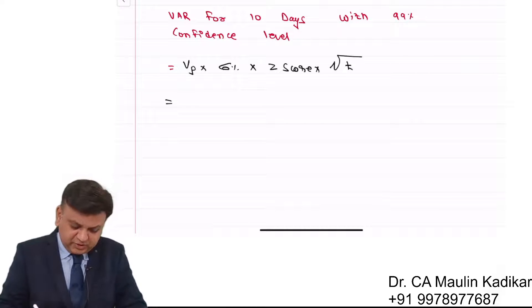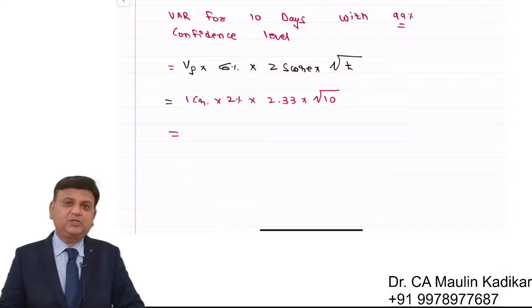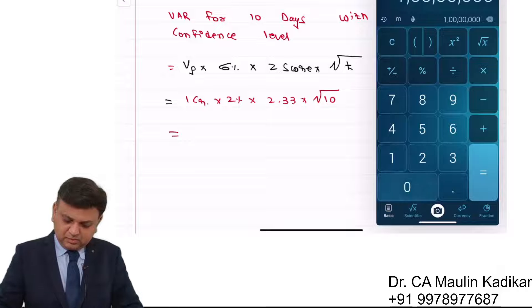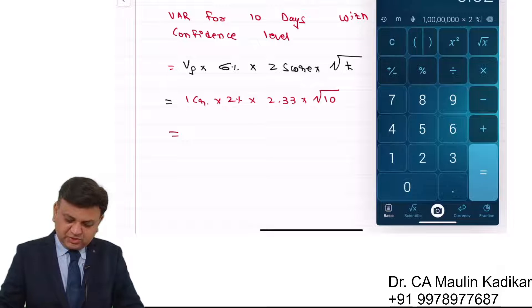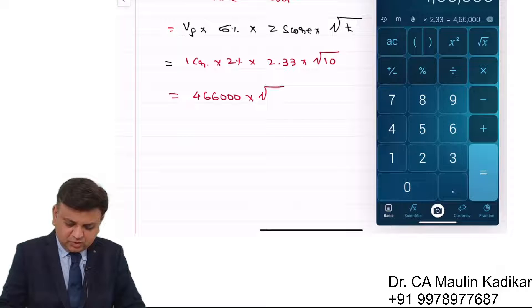It is value of the portfolio, which is 1 crore, times standard deviation of 2%, times the Z score. I've taken 99%, so it's 2.33, times the square root of the time period. So we'll convert the 1-day standard deviation to 10-day standard deviation. The answer will be 1 crore times 2% times 2.33, which comes to 4,66,000, times the square root of the time period.